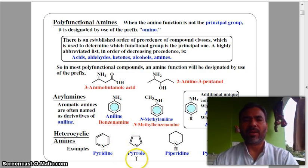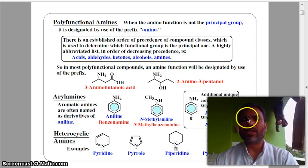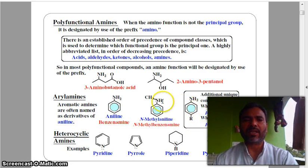Then heterocyclic amine: pyridine, pyrrole, piperidine, pyrrolidine. Additional unique common names: if R is CH3, then we call it toluidine, like para-toluidine. This is aniline.